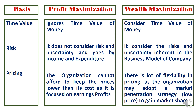When it comes to risk, risk and uncertainty are not considered under profit maximization — the focus is only on income and expenditure to calculate profits. Whereas in wealth maximization, there is flexibility to account for the risk and uncertainty inherent in the business model, since every business model has some kind of risk and uncertainty.